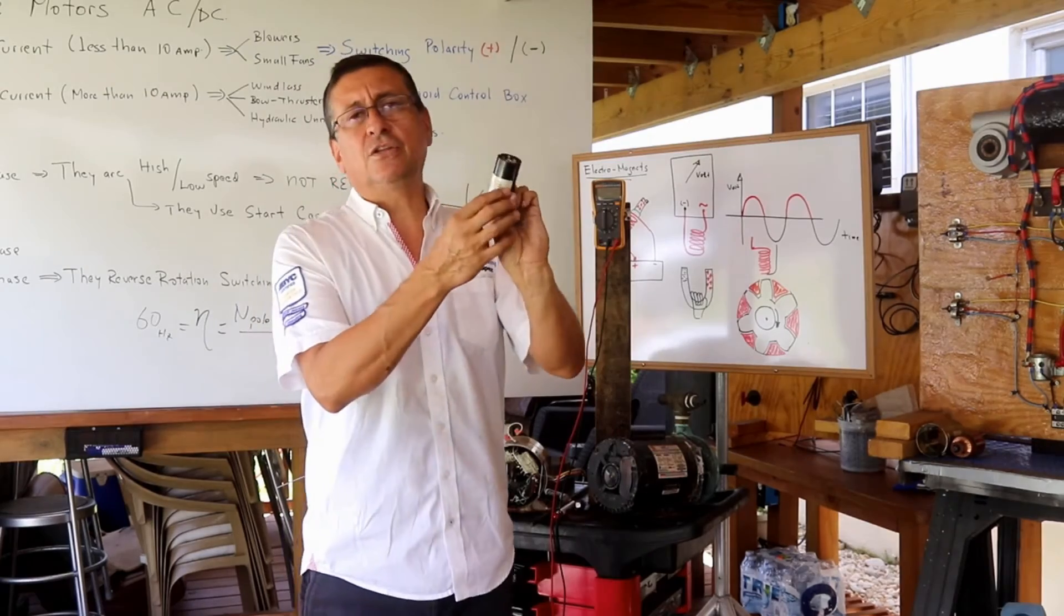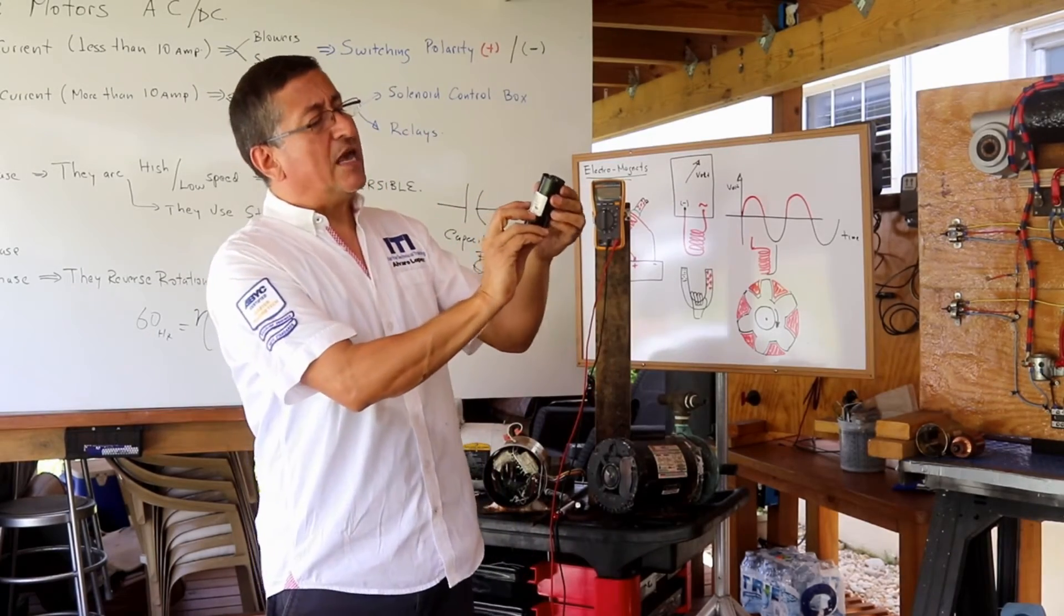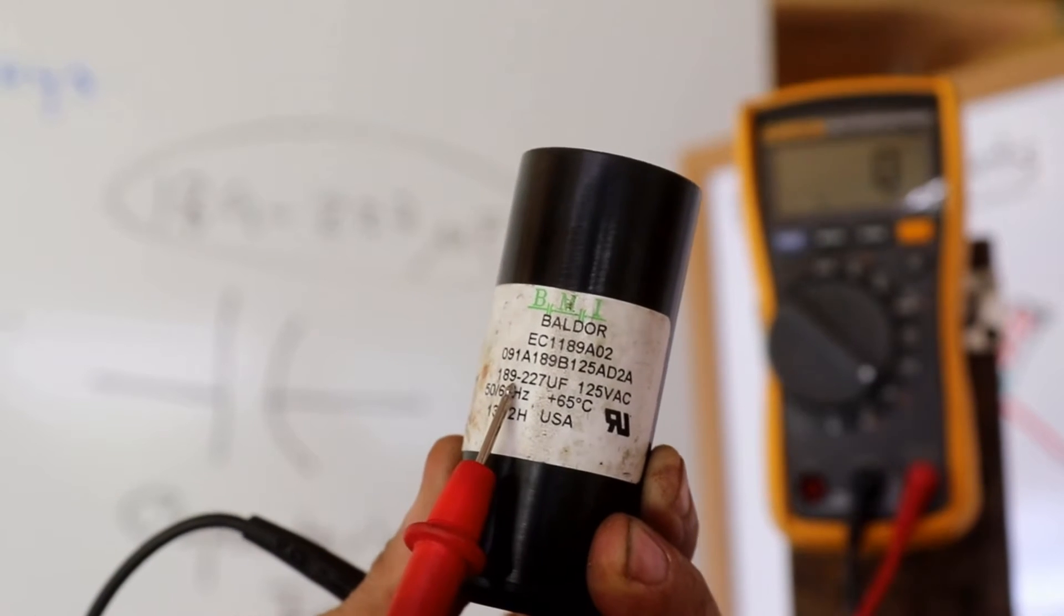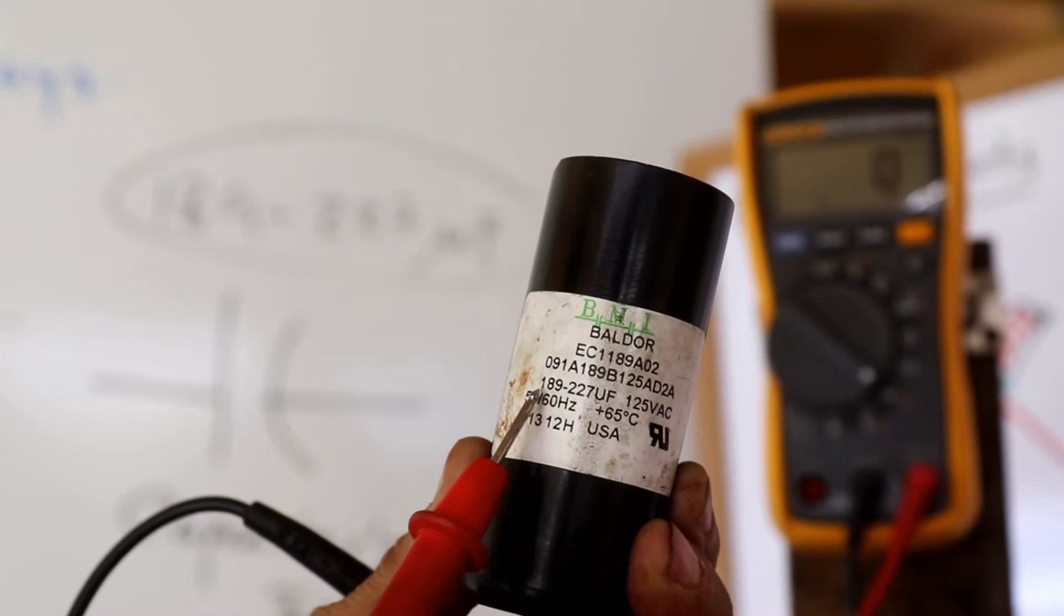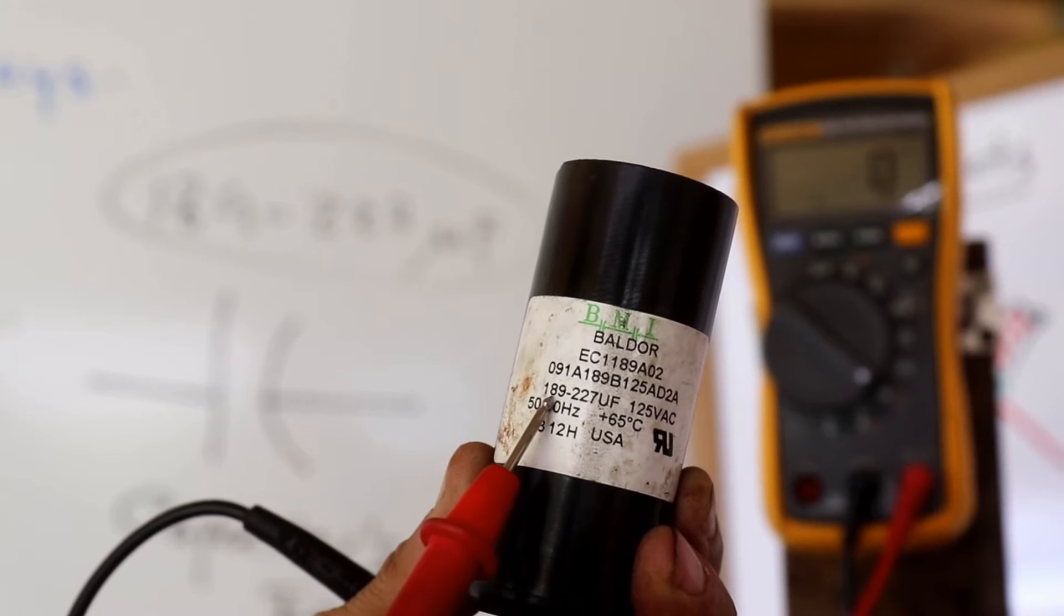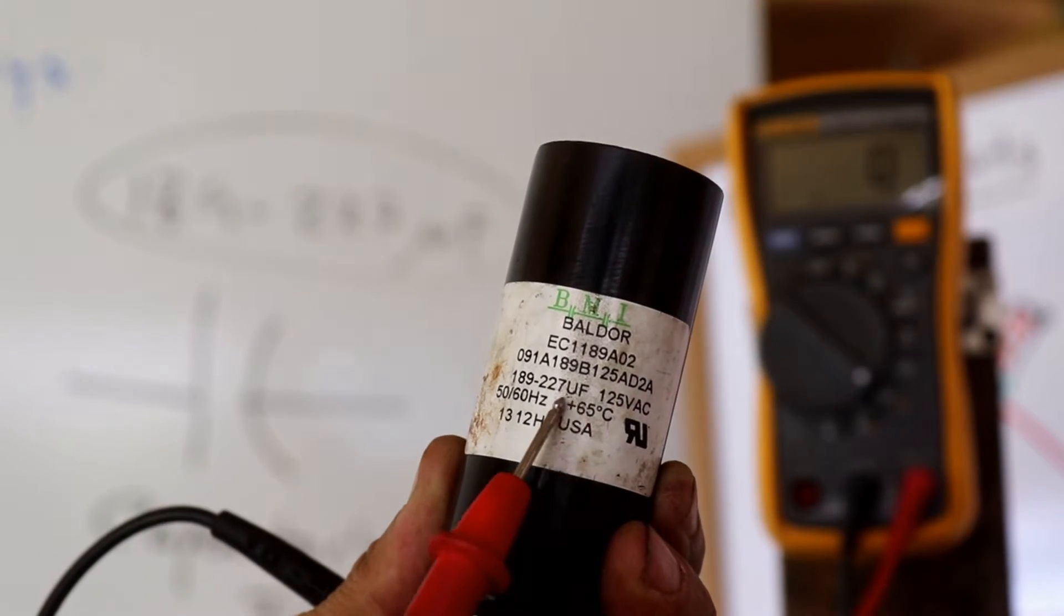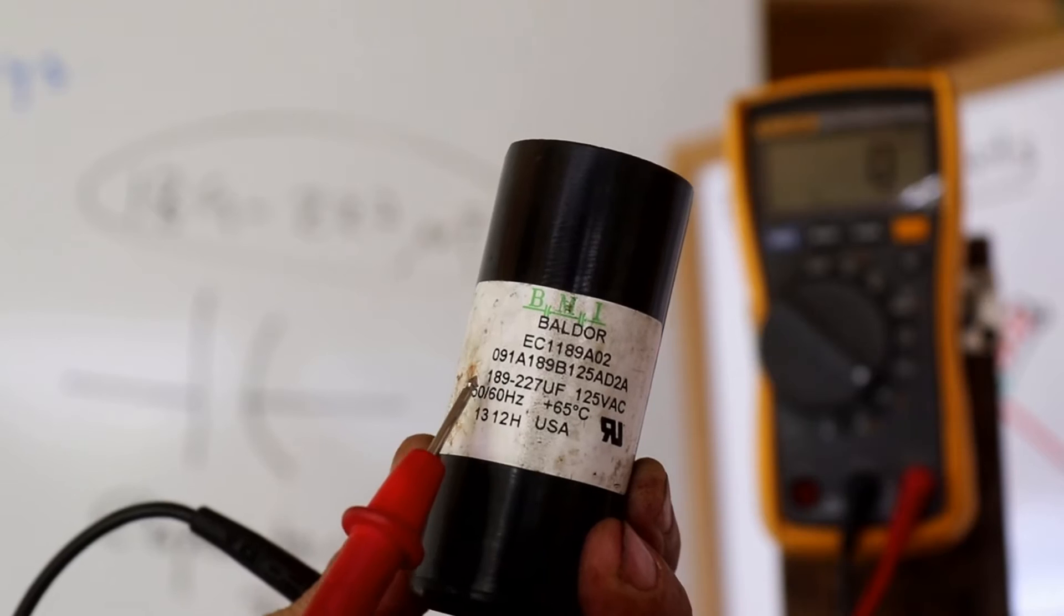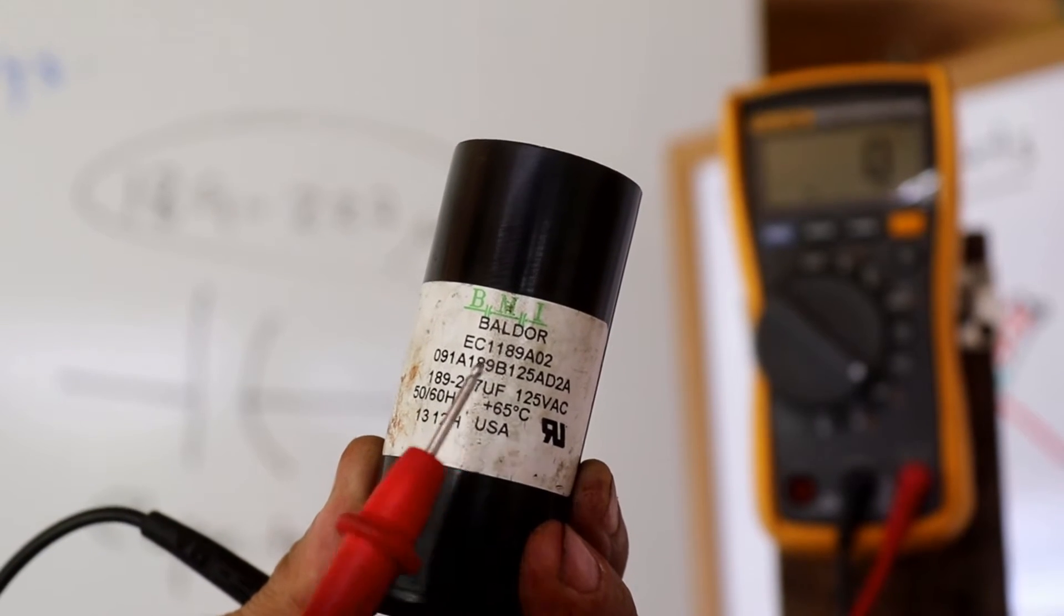When you have the capacitor outside you can check on the label. In this particular case the capacitor capacity in farads is in between 189 and 227 microfarads. In between 189 and 227.